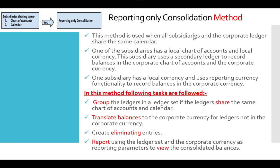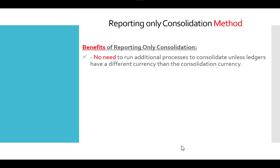In this case there is no need to transfer balances because all subsidiaries share the same chart of accounts, calendar, and are in the same instance. You just need to group them in a ledger set. If there are currency differences, you can translate; otherwise, just create eliminating entries if needed, then run your report to get the consolidated balances. The benefit is that no additional process is needed to consolidate unless ledgers have a different currency — only then do you run translate balances.